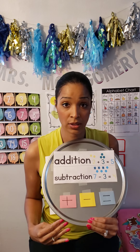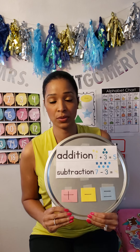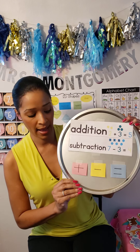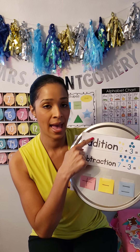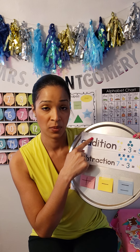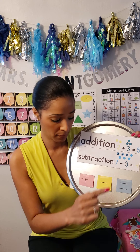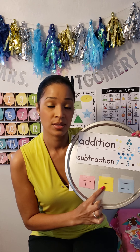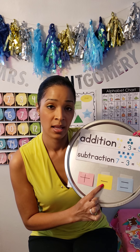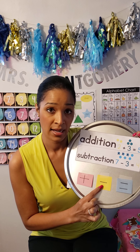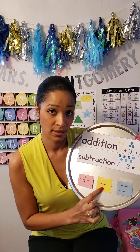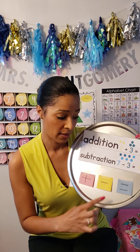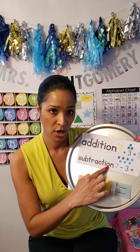So let's look at some of the symbols. Here we have a plus sign. A plus sign is what we use when we add, when we do addition. Here is a minus sign. A minus sign is what we use when we subtract, when we take away — subtraction.